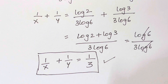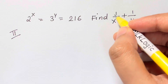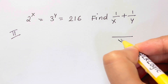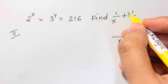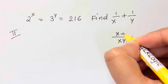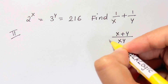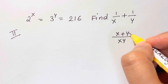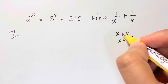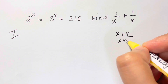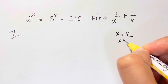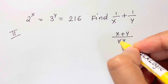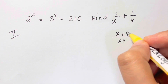Now I'm going to show you the second method. As you can see, we have 1 over x plus 1 over y. Taking the LCM, we get x plus y over xy. This encourages us to find xy and x plus y separately, so that we can substitute and solve easily.